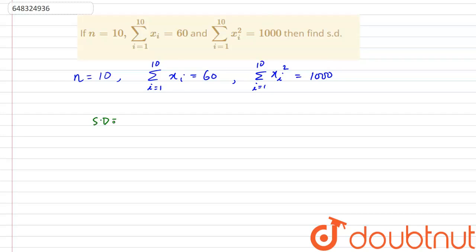The formula for the standard deviation is simply the square root of the summation of xi squared divided by n minus the summation of xi divided by n whole squared.